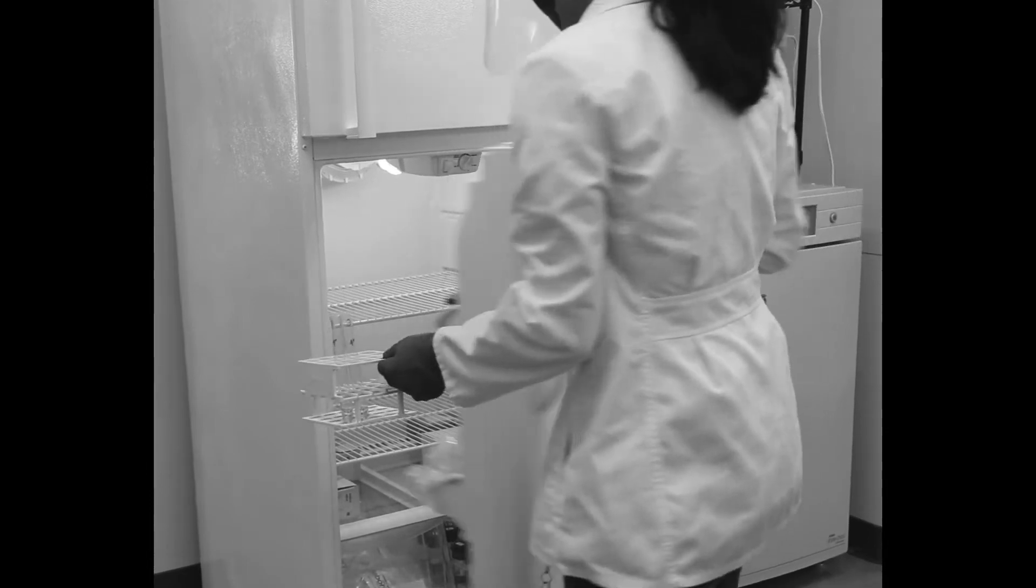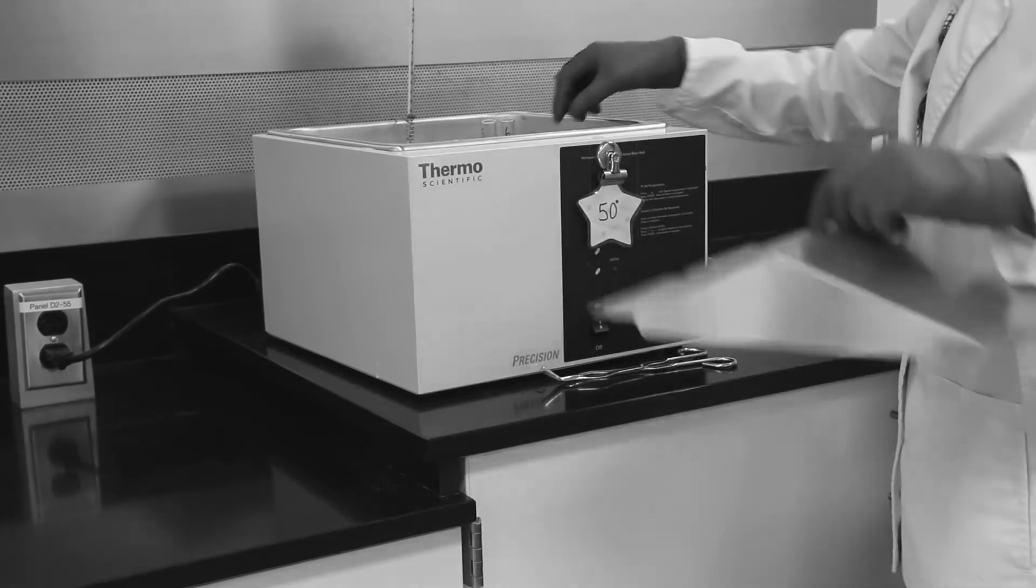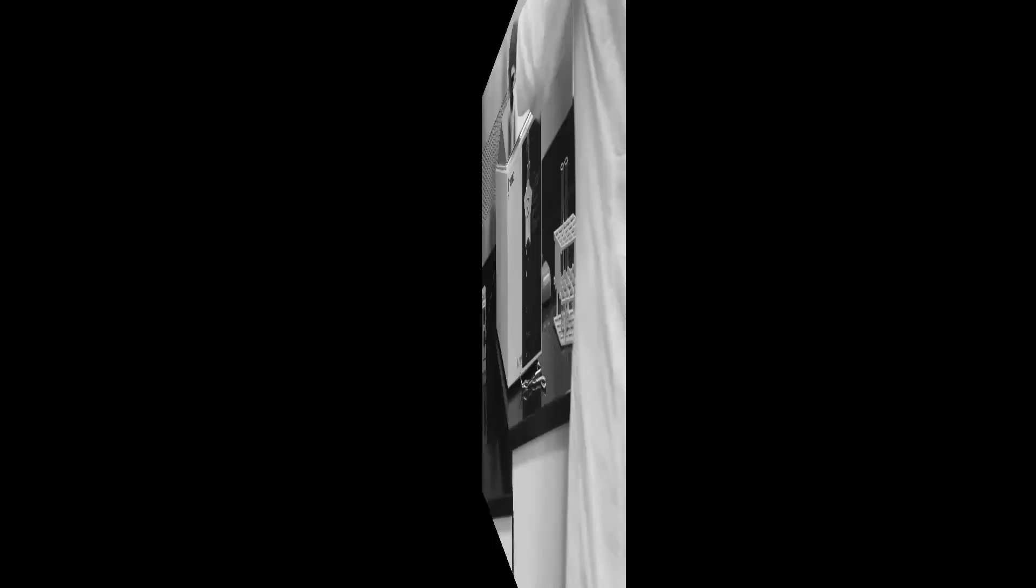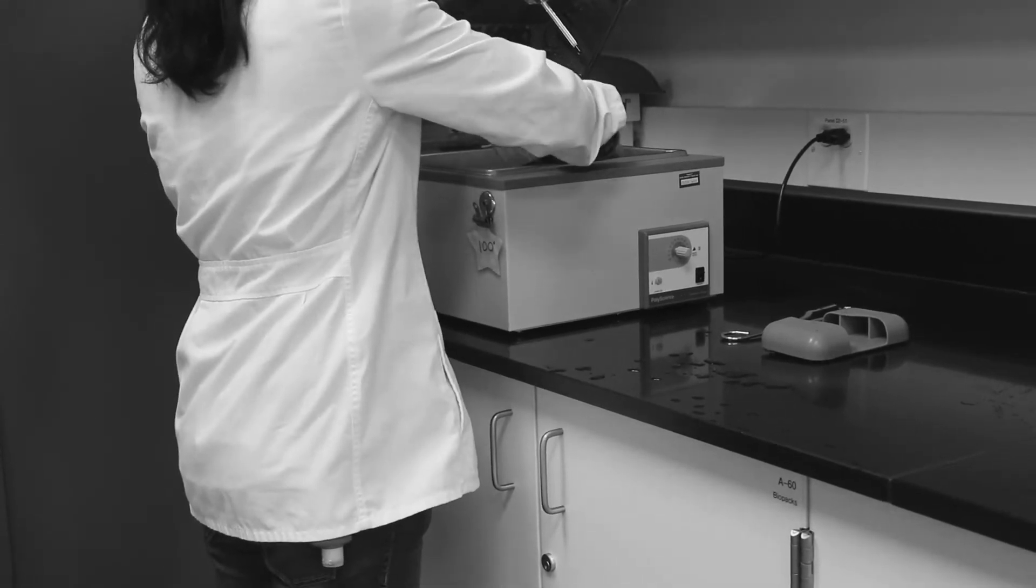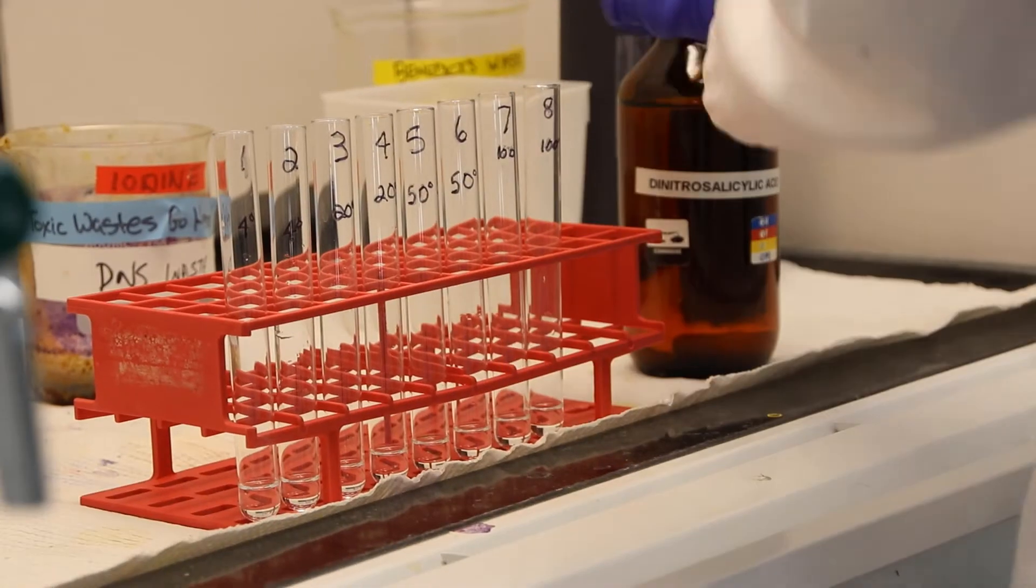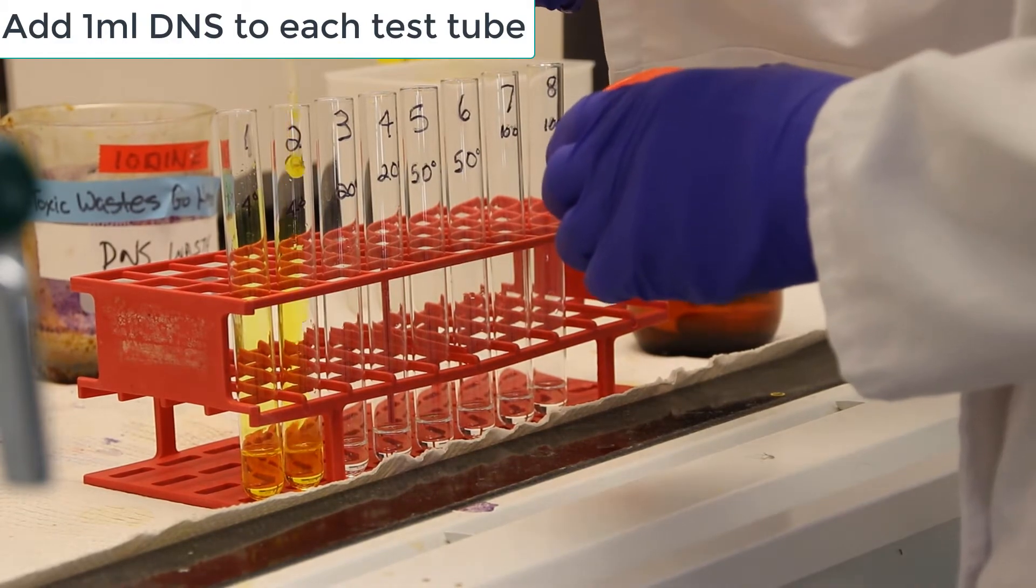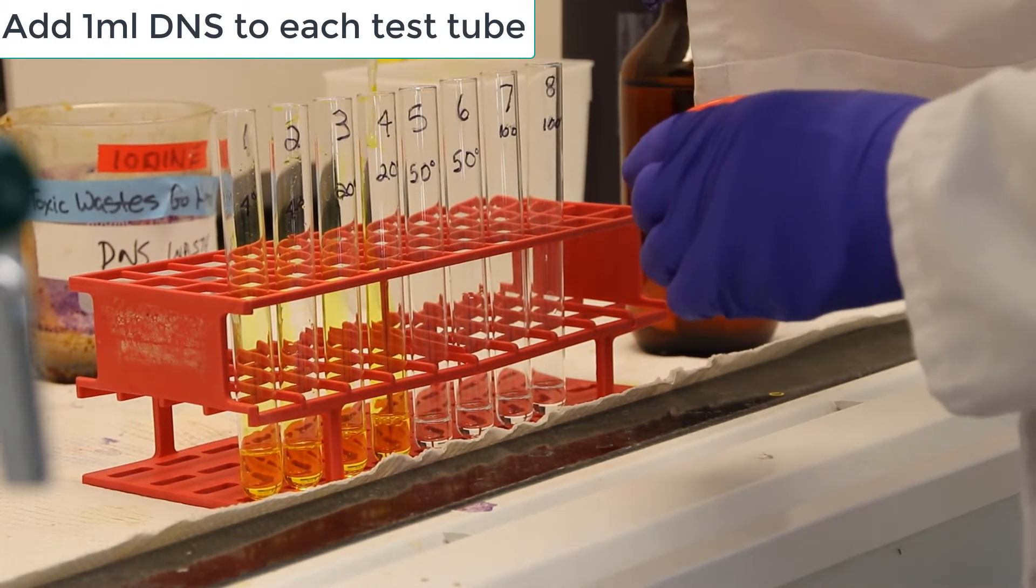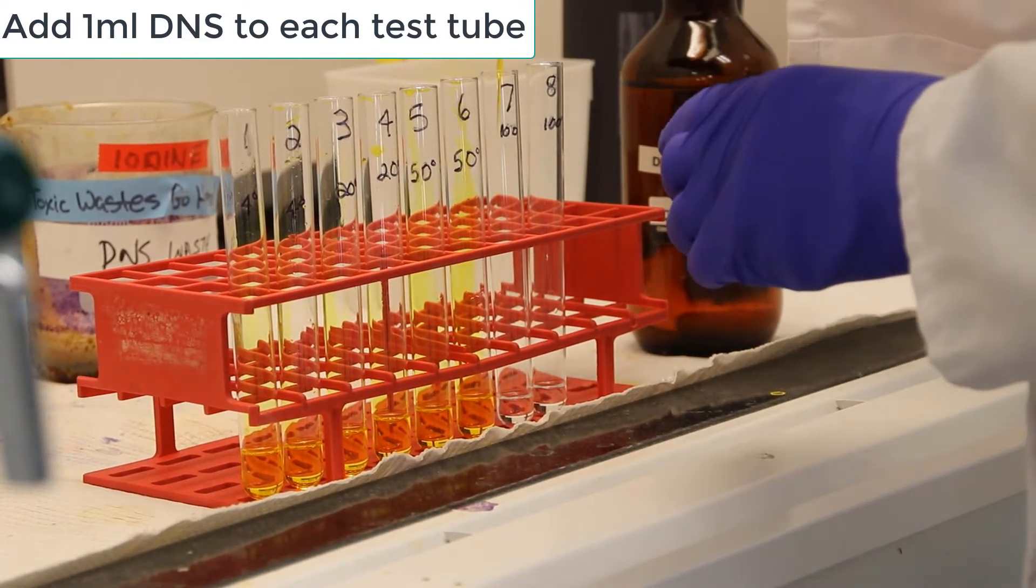15 minutes later we take them out of their respective temperatures and take them to the fume hood. Now you need to add 1 ml of DNS, that's dinitrosalicylic acid, to each test tube. DNS reduces glucose, and reduced DNS is visible and measurable on a spectrophotometer. DNS is also corrosive and should be handled safely.